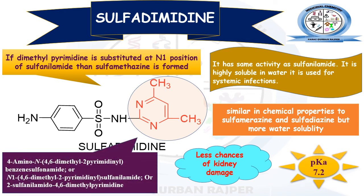The IUPAC name for Sulfadimidine is 4-amino-N-(4,6-dimethyl-2-pyrimidinyl) benzene sulfonamide, where the N position is being substituted with 4,6-dimethyl-2-pyrimidine. The second position of the pyrimidine ring is substituted with sulfanilamide. If someone asks at which position of the pyrimidine heterocyclic ring sulfanilamide is being substituted, the answer is the second position, because the numbering starts from position 1, then 2, then 3. So at the second position of the pyrimidine ring, the sulfanilamide ring is attached.